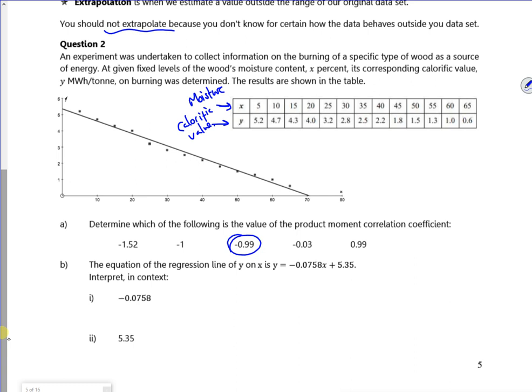So it says the equation of the regression line is y equals minus 0.758x plus 5.35. So we interpret it in context. Okay. Right. So remember, the change in x is percentage, isn't it, of moisture. So for every 1% moisture content, the calorific value increases by 0.758.